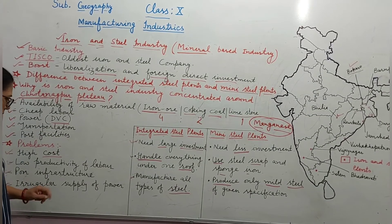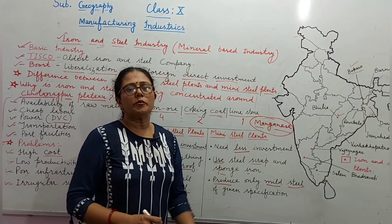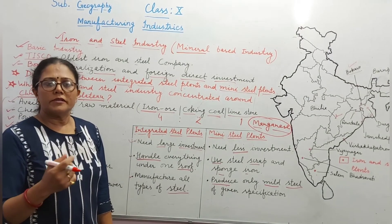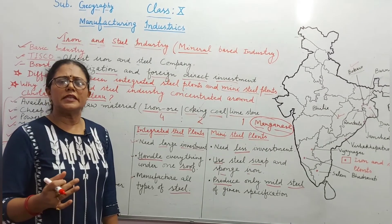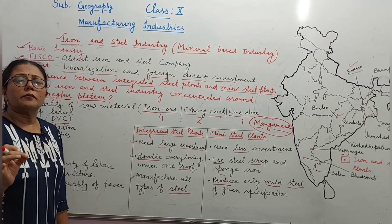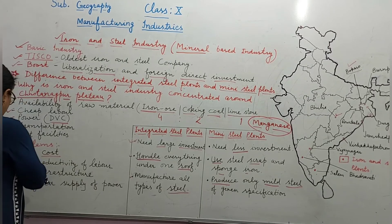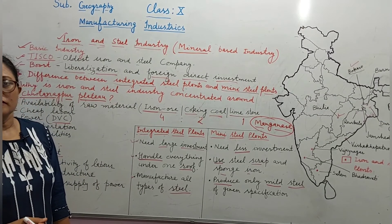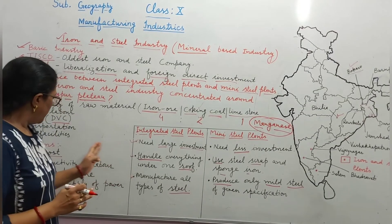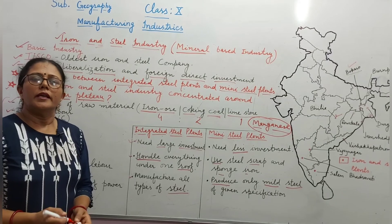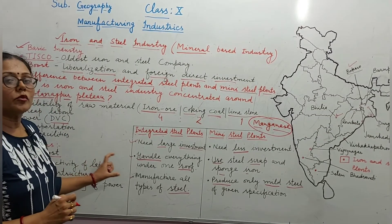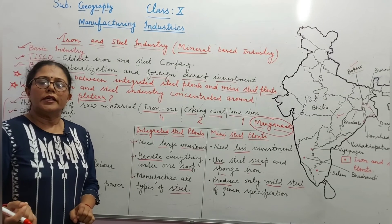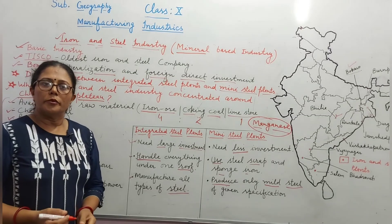चौथी problem है irregular supply of power — बिजली की अनियमित पूर्ति एक बड़ी समस्या है, और यह केवल एक particular area की नहीं बल्कि पूरे देश की problem है। इन समस्याओं के कारण India में उतना production नहीं हो पाता जितना होना चाहिए। इन बातों को ध्यान में रखते हुए government कोशिश कर रही है कि problems को solve करके production को increase किया जाए, क्योंकि economic development में iron and steel industries का बड़ा contribution होता है।